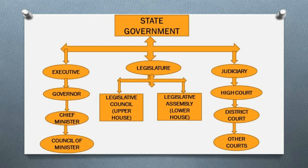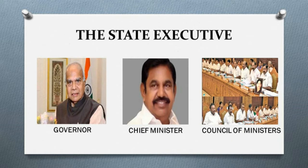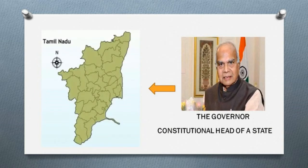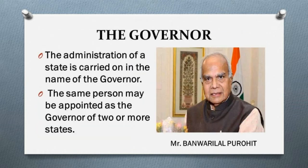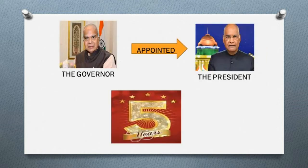The state executive consists of the governor, chief minister, and council of ministers. The governor is the constitutional head of the state executive. The administration of a state is carried on in the name of the governor. Generally there is a separate governor in each state, but the same person may be appointed as governor of two or more states. The governor is appointed by the president with a usual term of five years, but holds office during the pleasure of the president. The governor can also be transferred or resign by addressing the president.